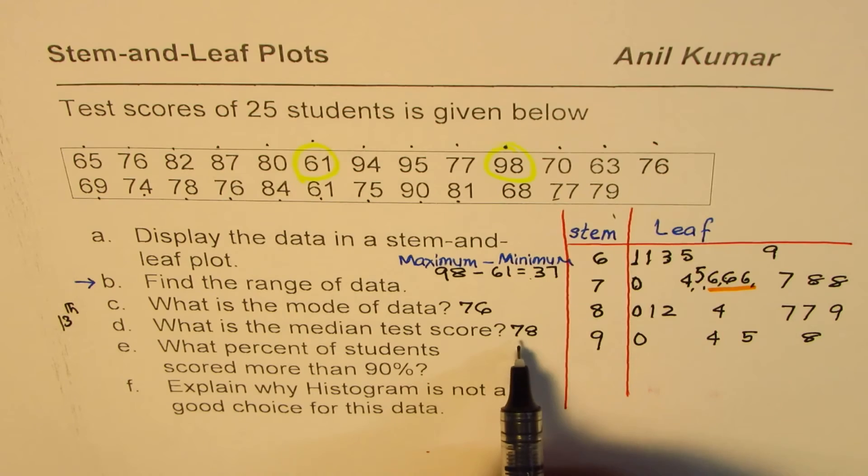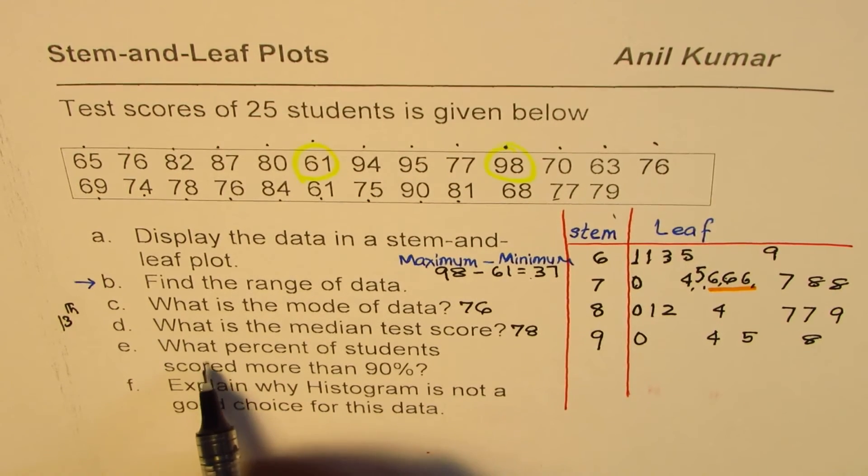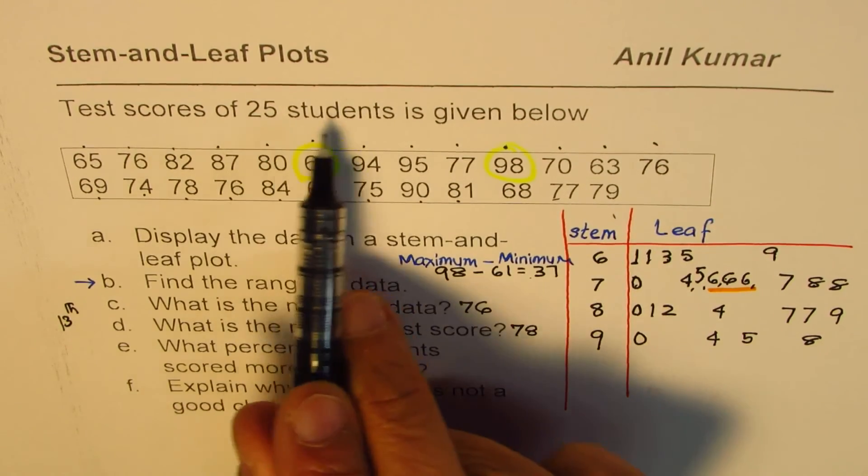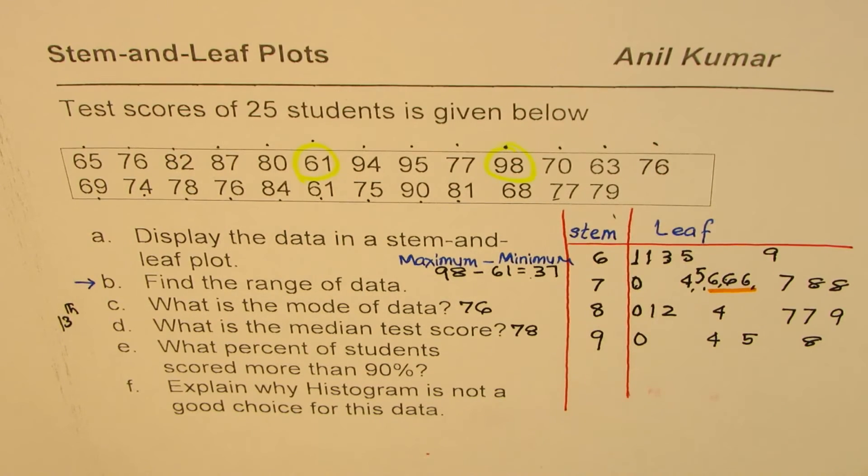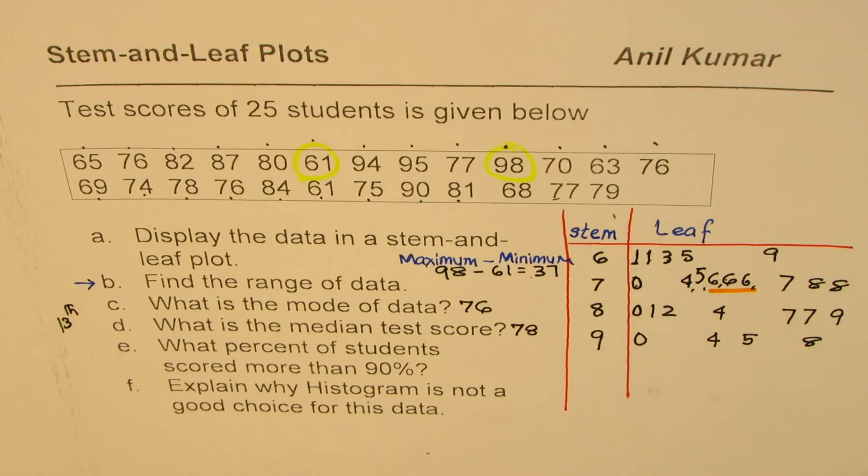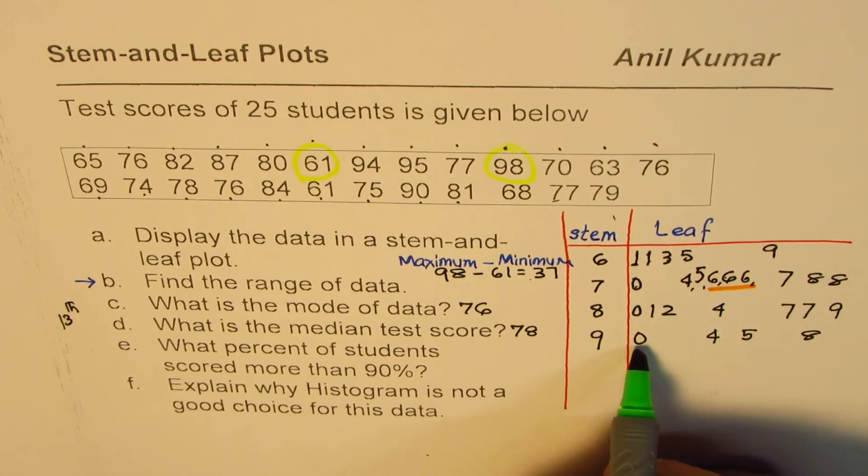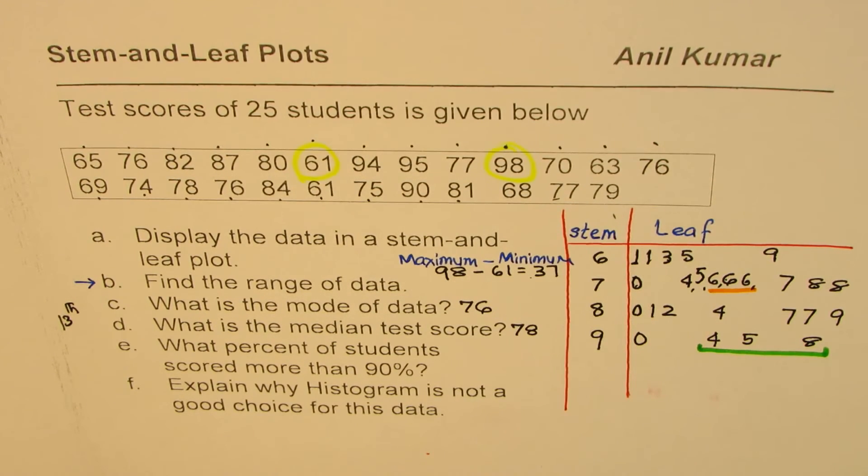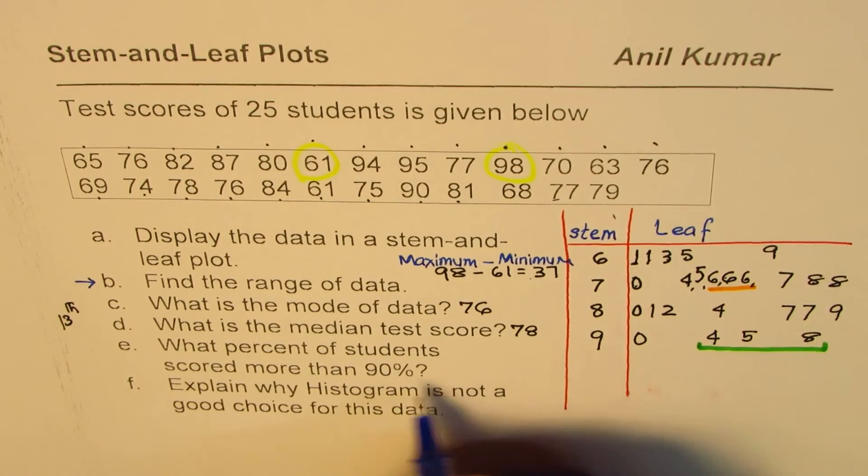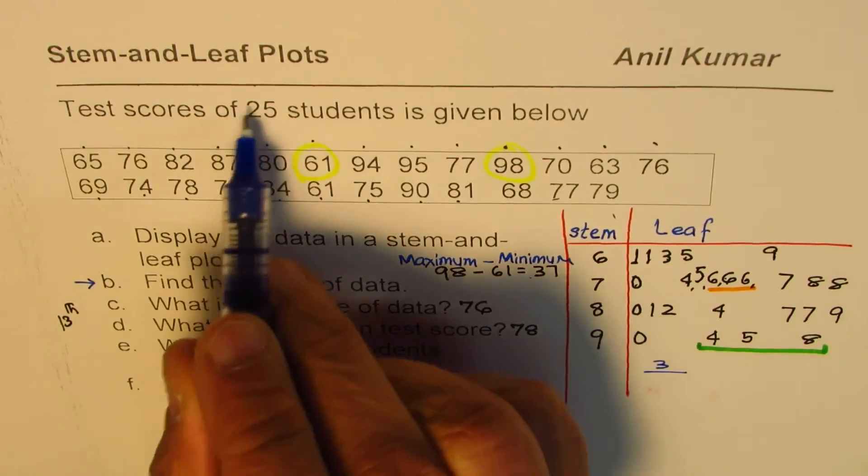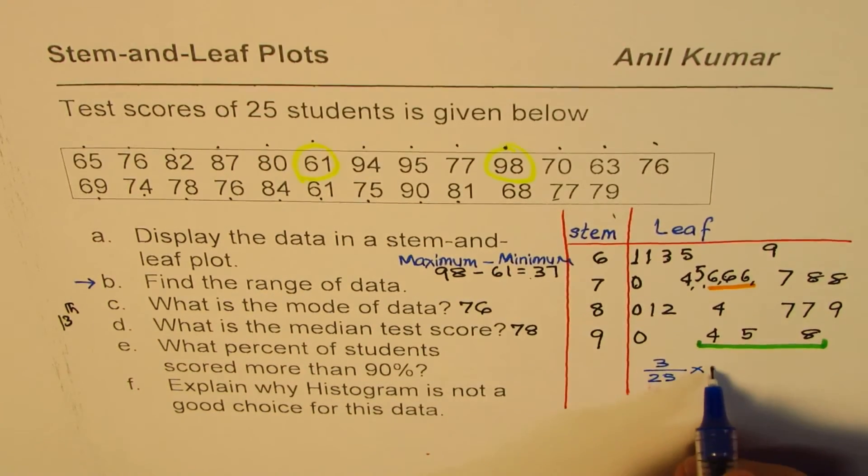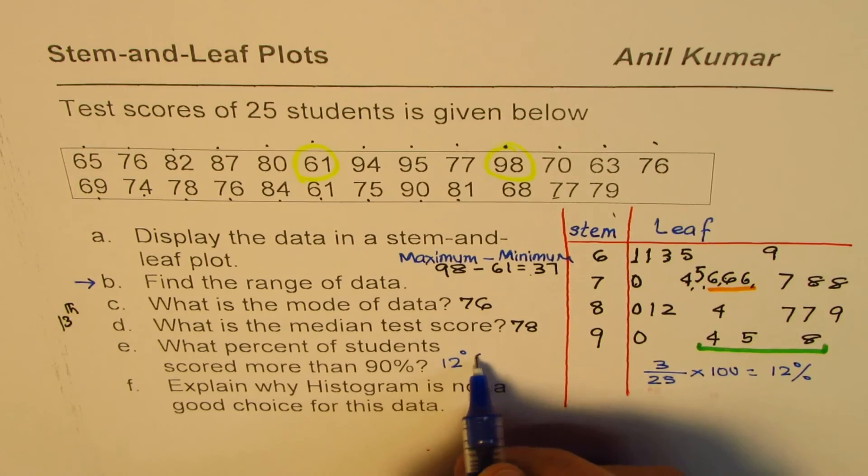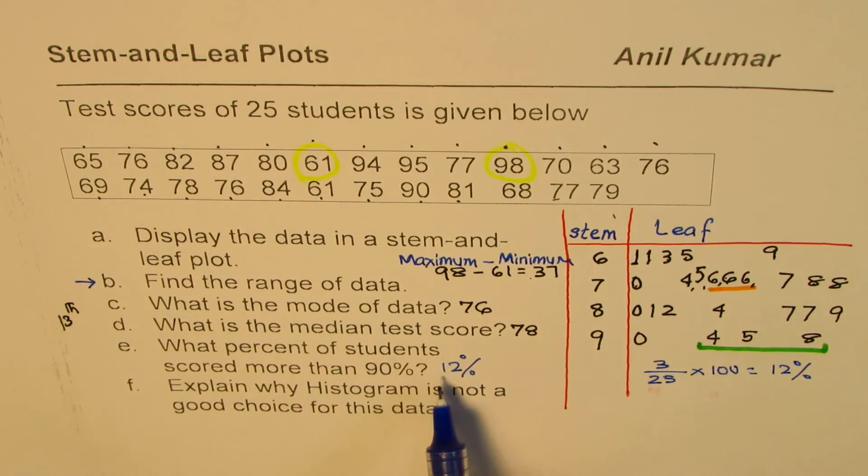Now the question is what percent of students scored more than 90 percent? We have in all 25 students, out of which how many scored more than 90 percent? More than 90 percent will not include this, this is equal to 90. We'll only include these three numbers: 94, 95, and 98. To find the percent, this is 3 out of 25, and then we are going to multiply by 100, which becomes 12 percent. So the answer for this is 12 percent.